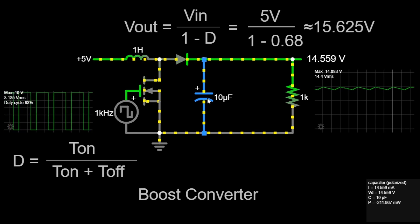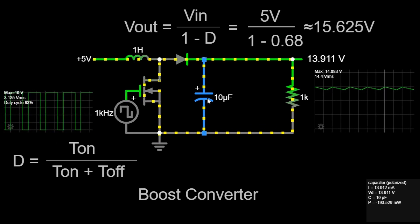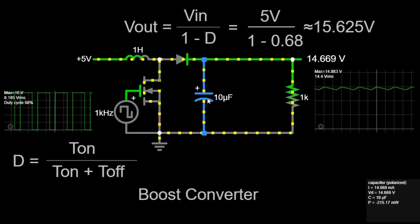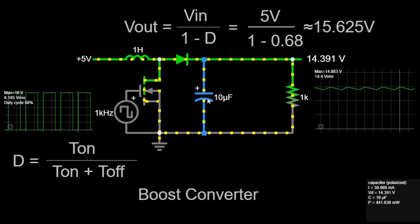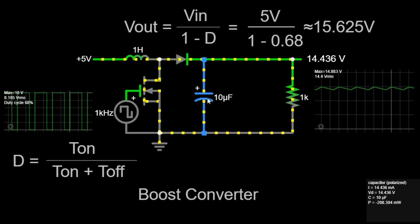The capacitor should have a low equivalent series resistance, or ESR, to minimize output voltage ripple. A low ESR capacitor will provide better filtering and a more stable output voltage.